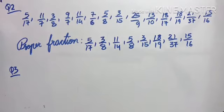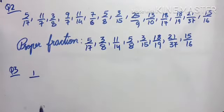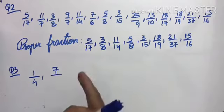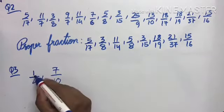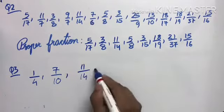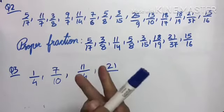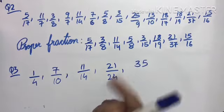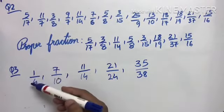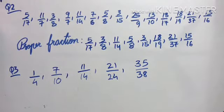Question 3: Write 5 proper fractions whose numerator and denominator differ by 3. The difference (denominator minus numerator) should equal 3. Examples: 1/4, 7/10, 11/14, 21/24, 35/38. In all these, the numerator is smaller (proper fraction) and the difference between denominator and numerator is 3.